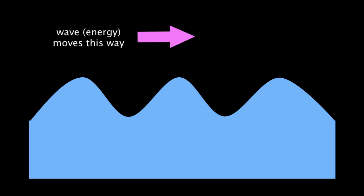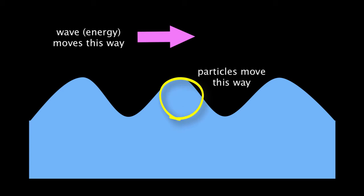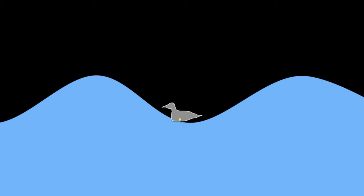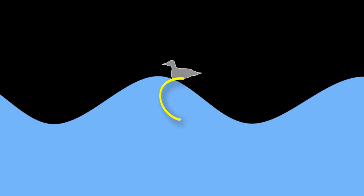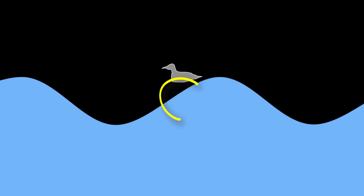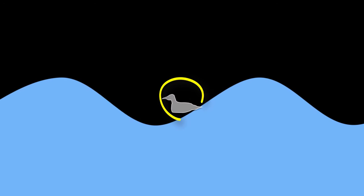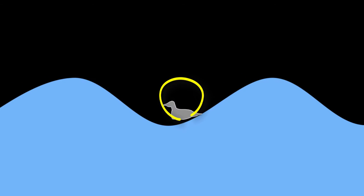We have to distinguish between the energy of the wave that enables it to move forward versus the actual motion of the individual water particles. If you were a seagull or a person floating on a wave, you would feel the wave draw you toward it as it approached, followed by a rise and a surge in the direction of the wave, followed by a drop and a push away from the passing wave. This full orbit is called the particle motion or an orbital.